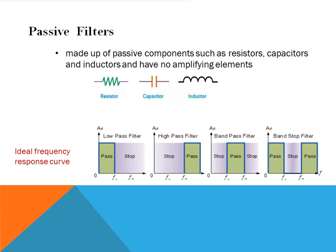Depending upon which way we connect the resistor and the capacitor with regards to the output signal, it will determine the type of filter construction, resulting in either a low pass filter or a high pass filter. The main function of any filter is to allow signals of a given band of frequencies to pass unaltered while attenuating or weakening all others that are not wanted. Therefore, depending upon the amplitude response characteristics of an ideal filter, there are four basic filter types: the low pass filter, high pass filter, band pass filter, and the band stop filter.